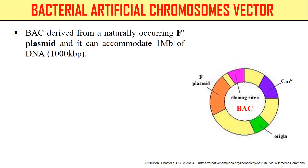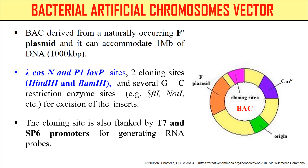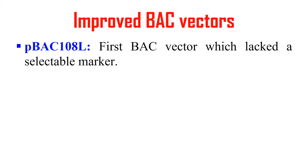Now, the Bacterial Artificial Chromosome vectors. This is the diagram of a typical BAC vector. It is naturally derived from the F plasmid and can take up to 1 MB of DNA. It contains two lambda cosN and P1 loxP sites. It also contains two cloning sites: HindIII and BamHI, plus certain other G+C restriction sites like SfiI and NotI. Additionally, it has T7 and SP6 promoters for generating RNA probes.